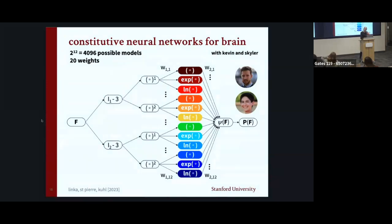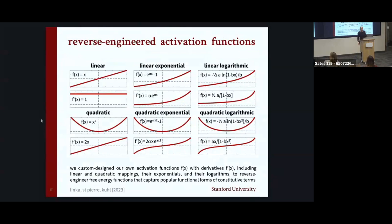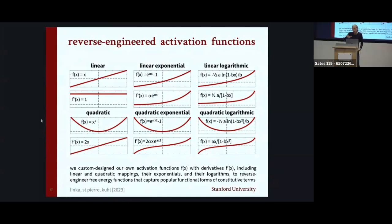We also reverse-engineer the activation functions. The functions of our last layer can be linear, exponential, or logarithmic — and these look much more like the stresses I've shown. They're smooth, they go through zero, they're monotonic, and they don't converge to a horizontal tangent. They do all the nice things we actually see in stress measurements. We're sharing all the data — we've cleaned it up. If you work with data, you know much of the work goes into cleaning it. You can go to our GitHub channel and download it and run it, or if you have your own data, clean it to a similar format and run it over that.